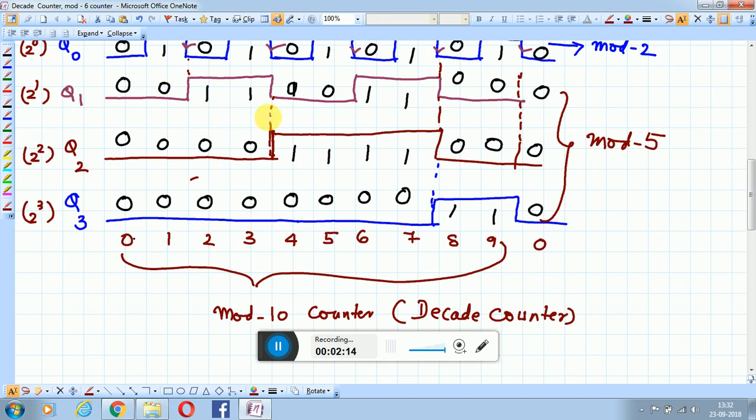The counter sequence shows: 0, 1, 2, 3, 4, 5, 6, 7, 8, 9, then back to 0. So it's counting from 0 to 9, and you call it a decade counter.